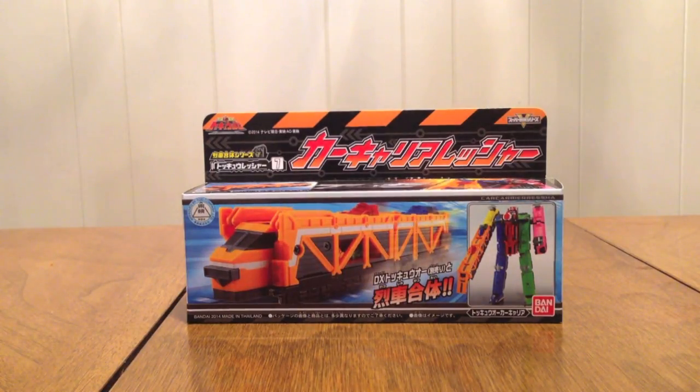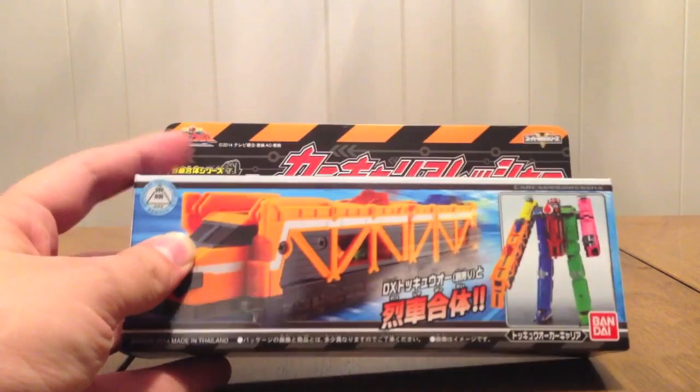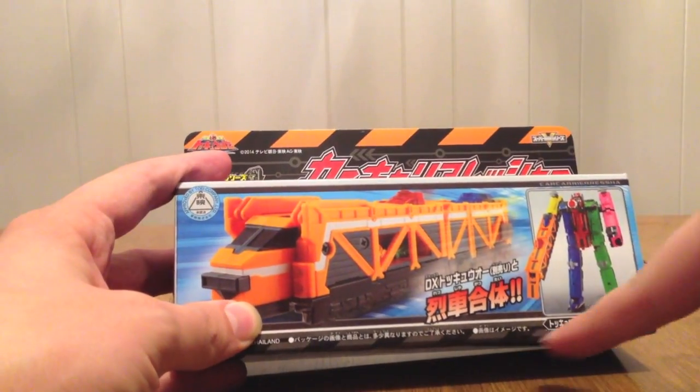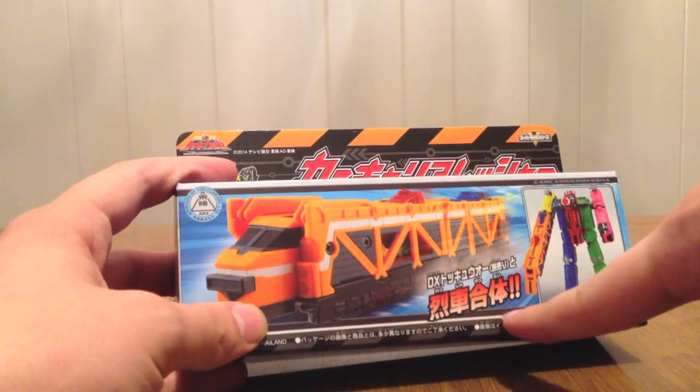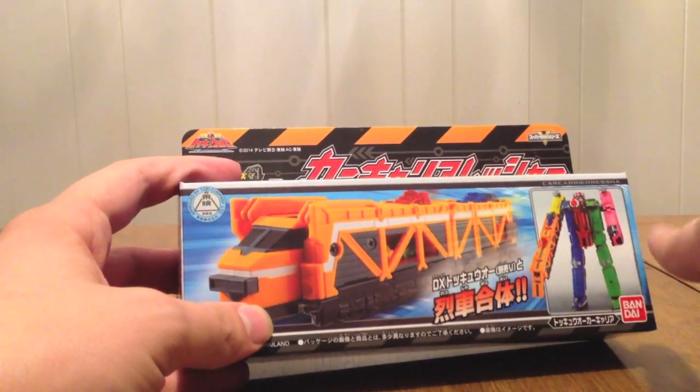So this is number 7, we just saw Tank was number 6, now we have Car Carrier number 7. You'll see it's the exact same box as Tank. Here's Car Carrier Russia, here's Tokyo Car Carrier, Russia Busso and all that fun stuff. I believe it just says Russia Gatai, but anyway.